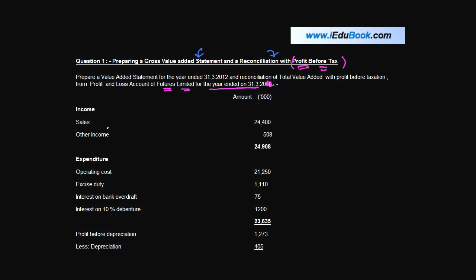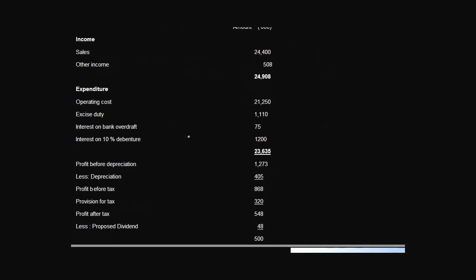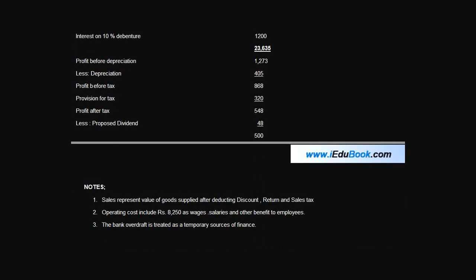You have Income comprising of Sales and Other Income, then the Expenditure: Operating Cost, Excise Duty, Interest on Bank Overdraft, Interest on 10% Debentures, Profit before Depreciation, then Depreciation, PBT, Provision, Provision after Tax, Proposed Dividend and some Notes.